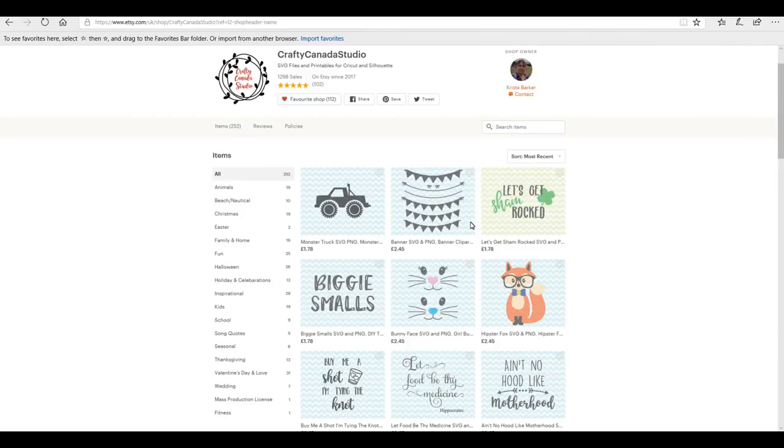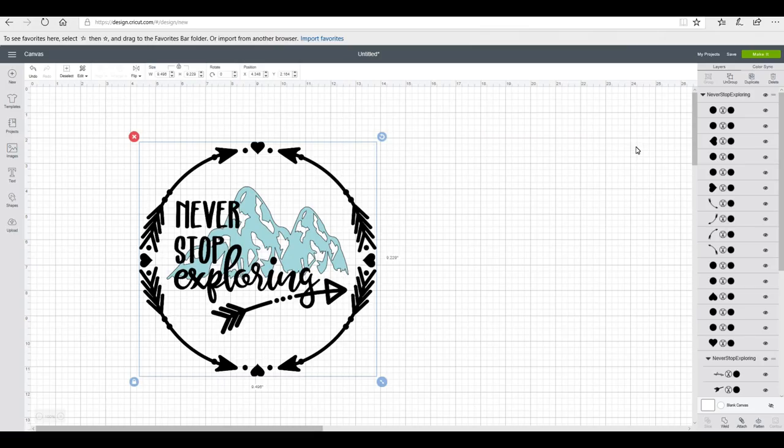Hi my lovelies, so today we are going to create an etch and vinyl project to go on slate. We're going to etch out using some Oracle 651 as a stencil and then we're going to cut out some vinyl as well. I'm here at Crafty Canada Studio, which is a fantastic Etsy shop, and I will link to it below. We're actually using one of the designs from this shop today.